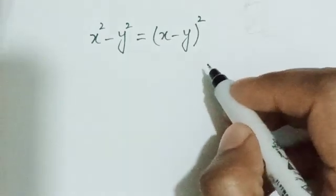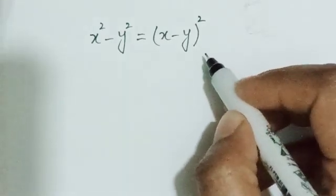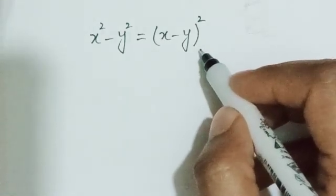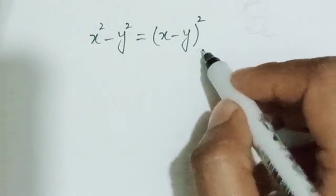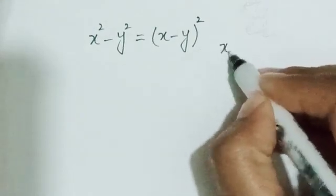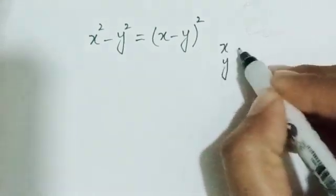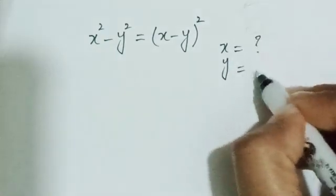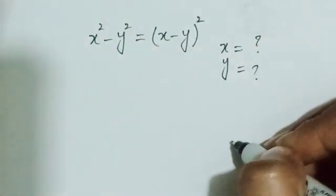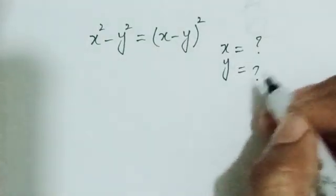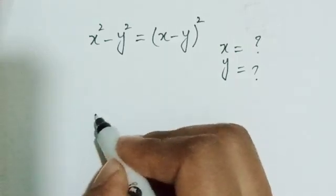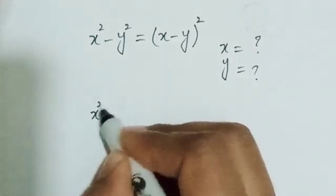Hi everyone, here I have a very nice algebraic equation and we have to solve it for X and Y. We have to find the values of X and Y, so let's solve it. Here I have the equation x squared minus y squared equals (x minus y) whole squared.